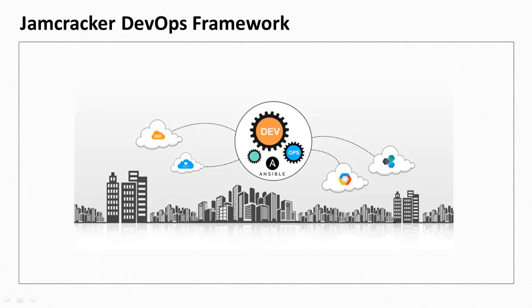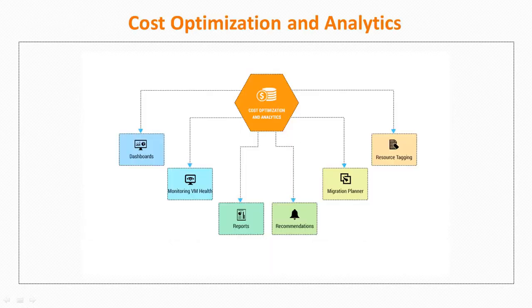The Jamcracker DevOps framework facilitates creating and managing additional IaaS resources like launching VMs with a private network or VPC, or spinning up RDS instances easily using Ansible scripts. A service provider can have complete visibility of cloud revenue and trend patterns for all customers and across multiple clouds with administrator dashboards.